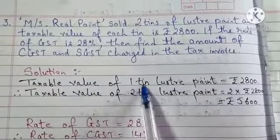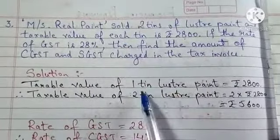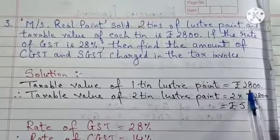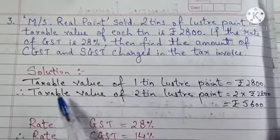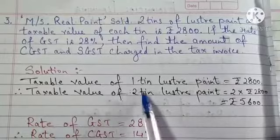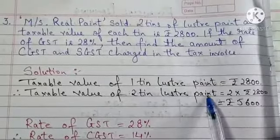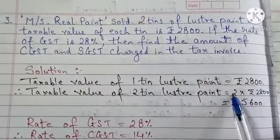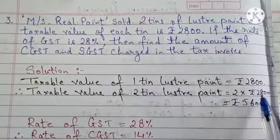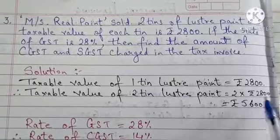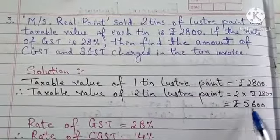Taxable value of 1 tin, that is each tin, Luster Paint is Rs. 2800. Therefore, taxable value of 2 tins Luster Paint will be 2 × 2800. That gives you what? 5600.